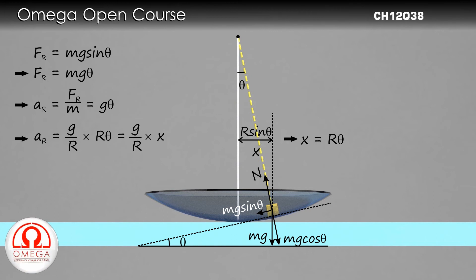Thus, angular frequency is equal to square root of g by R. Now, the time period is given by 2 pi by omega, or 2 pi times root R by g. This is our answer.